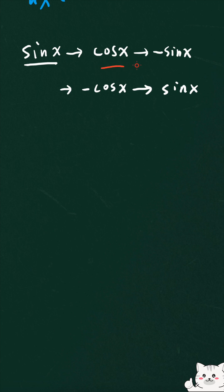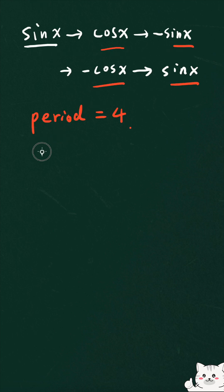which means every 1, 2, 3, 4 derivatives, it goes back to the original one. The period actually is 4. So now we need to find the 99th derivative of sine x. Basically, you can use 99 to be divided by 4 and try to find out the remainder here. So 99 divided by 4, the remainder is 3.